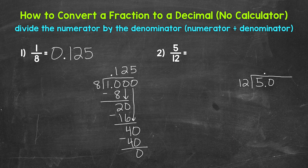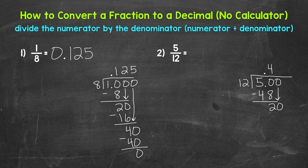How many whole groups of 12 in 50? Four — that gets us to 48. Make sure that four is above the zero. Four times 12 is 48. Subtract — 50 minus 48 is 2, so we need to continue on. Let's use another zero that we can bring down. Now we have 20 — 20 divided by 12. How many whole groups of 12 in 20? One, that gets us to 12. One times 12 is 12. Subtract — 20 minus 12 is 8.